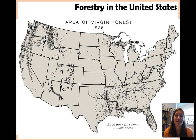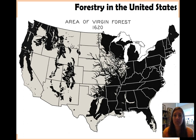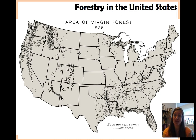Now fast forward 300 years and here's our estimate of forest cover. I want to make a huge note, because you might see this in textbooks or online: this is an area of virgin forest. What that means is forest that has been around since 1620. So this is not showing forest cover in the entire United States in 1926. Now, 1926 was the height of our sawing and cutting down forests — our highest rates of deforestation were in the 1920s.